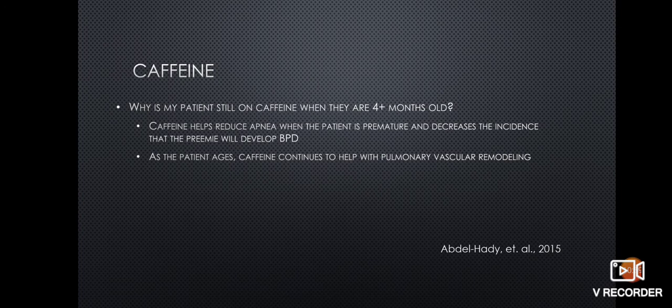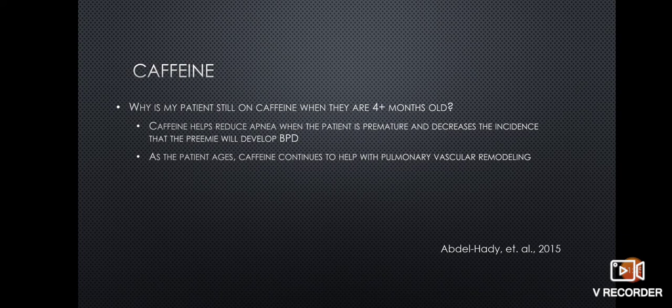A common question from nurses and families when dealing with a patient with BPD is: why is this patient still on caffeine when they are four months of age or older? Caffeine helps reduce apnea when the patient is premature and decreases the incidence that the preemie will develop BPD. As the patient ages, caffeine continues to help with pulmonary vascular remodeling.